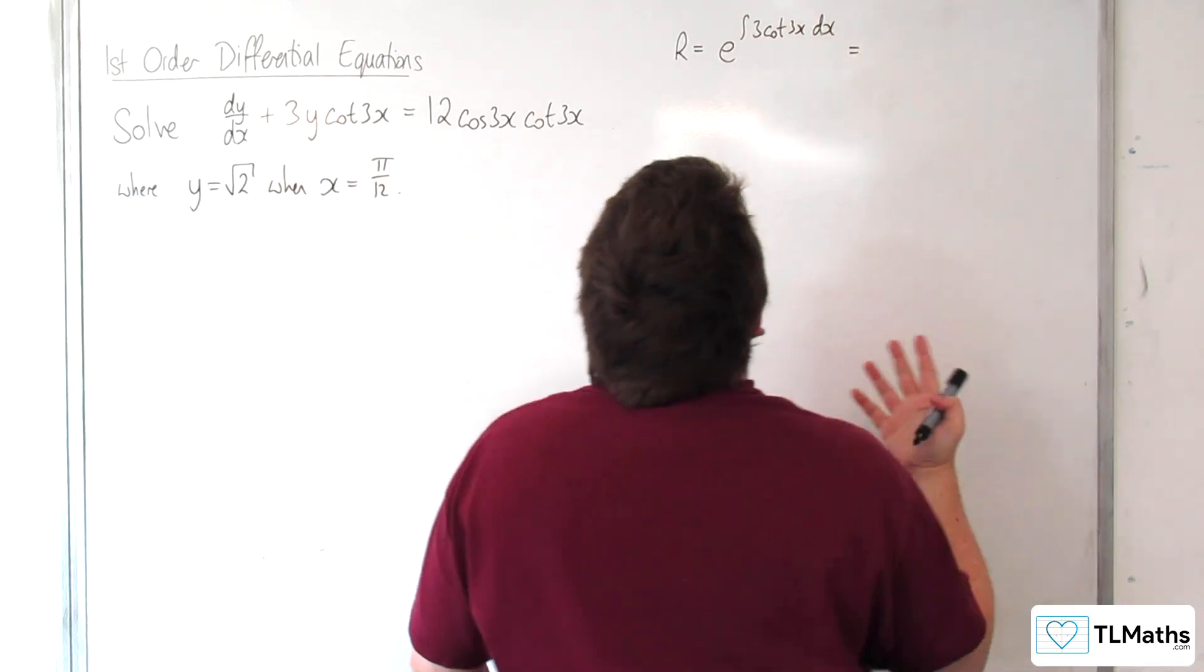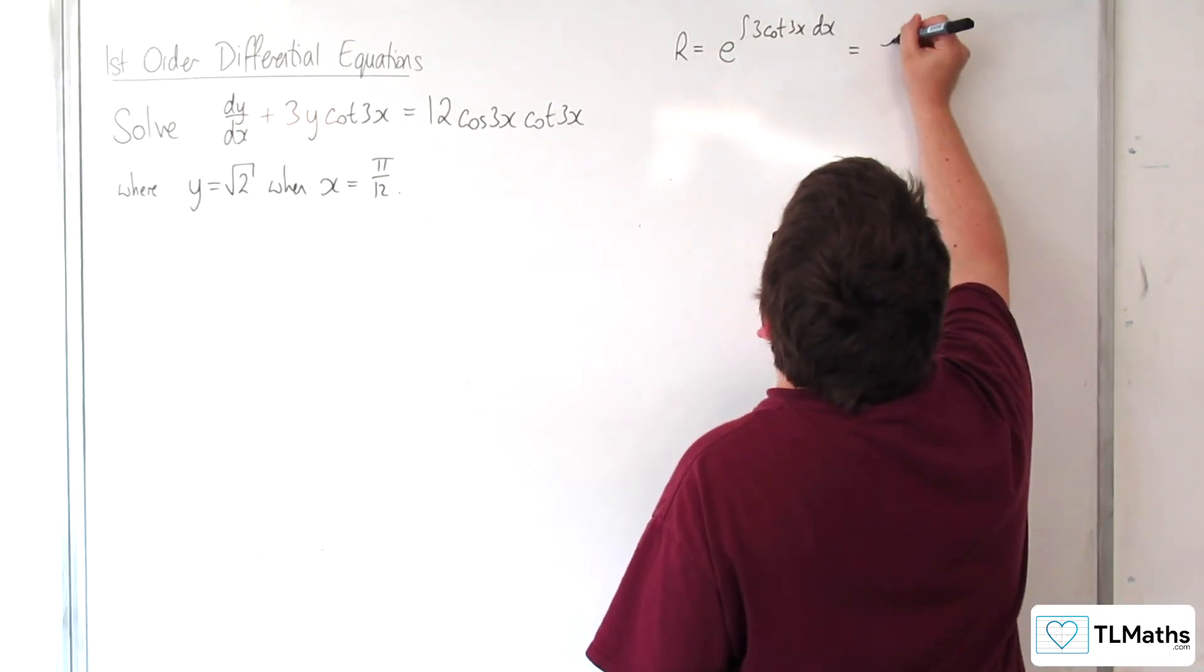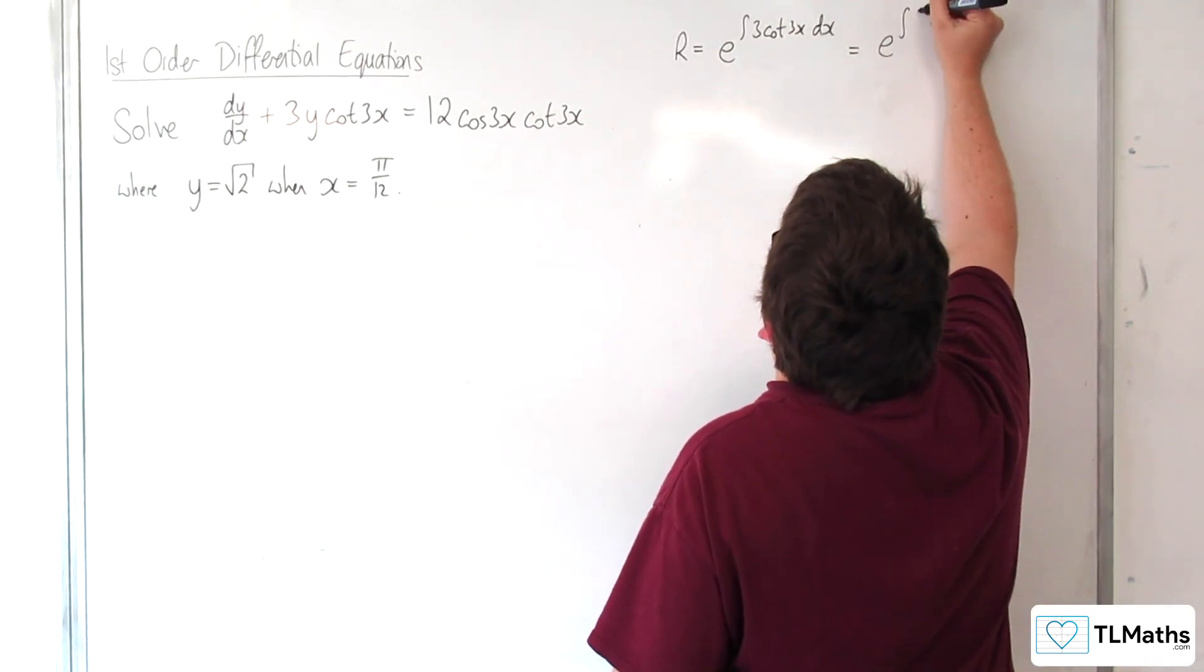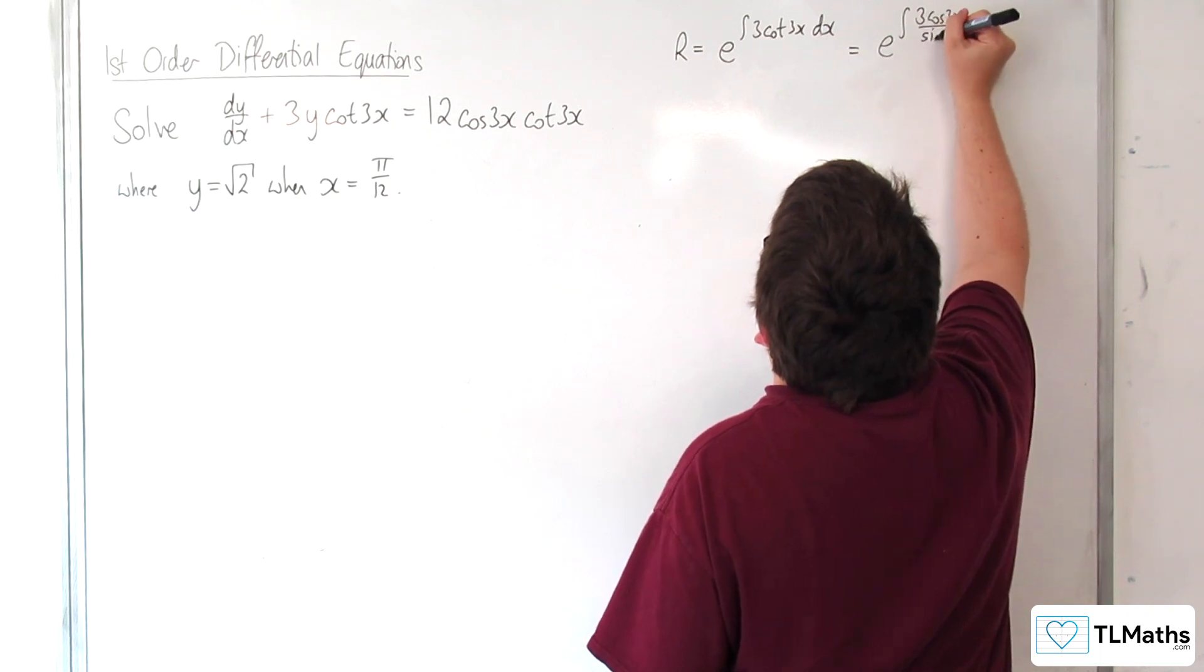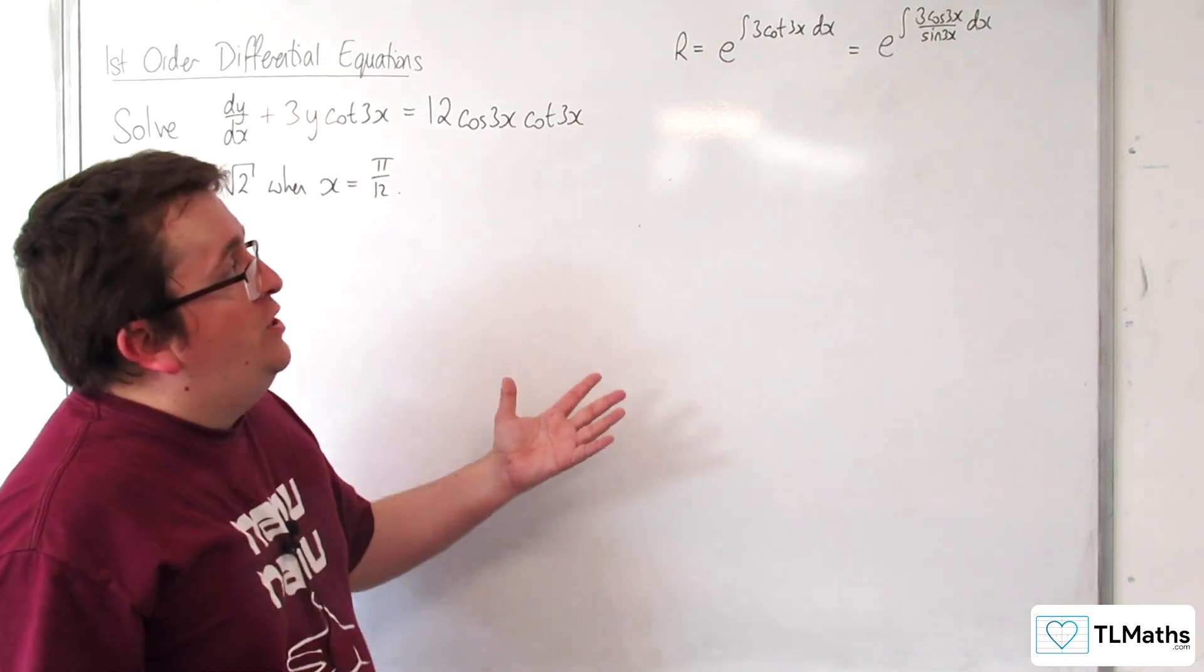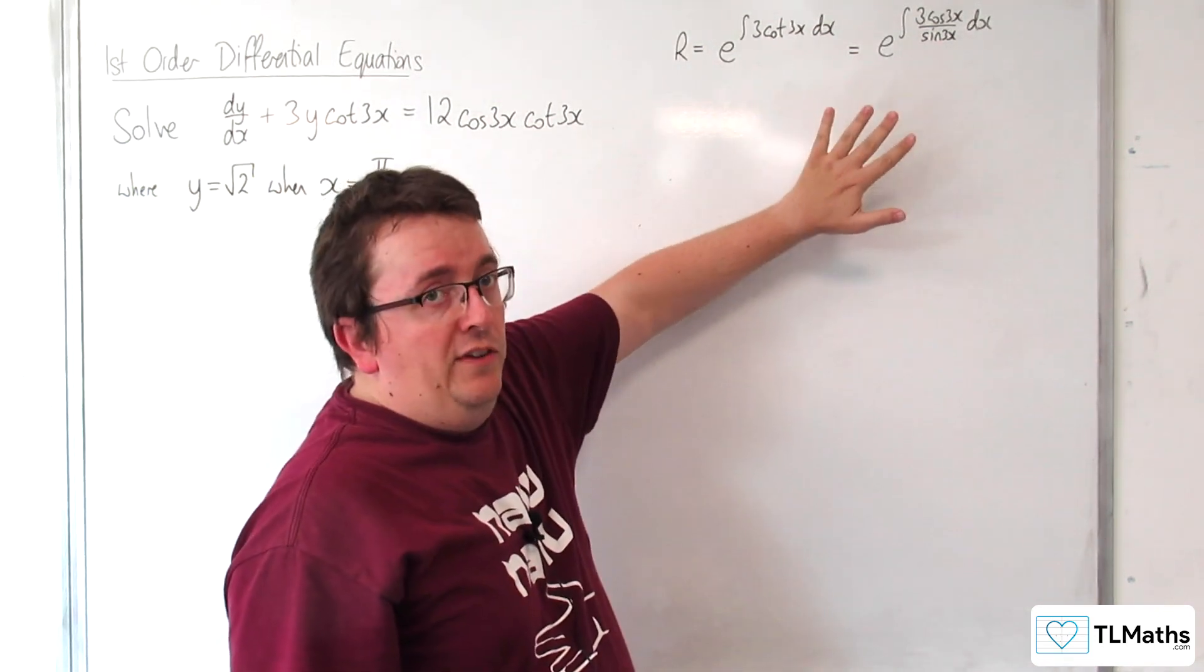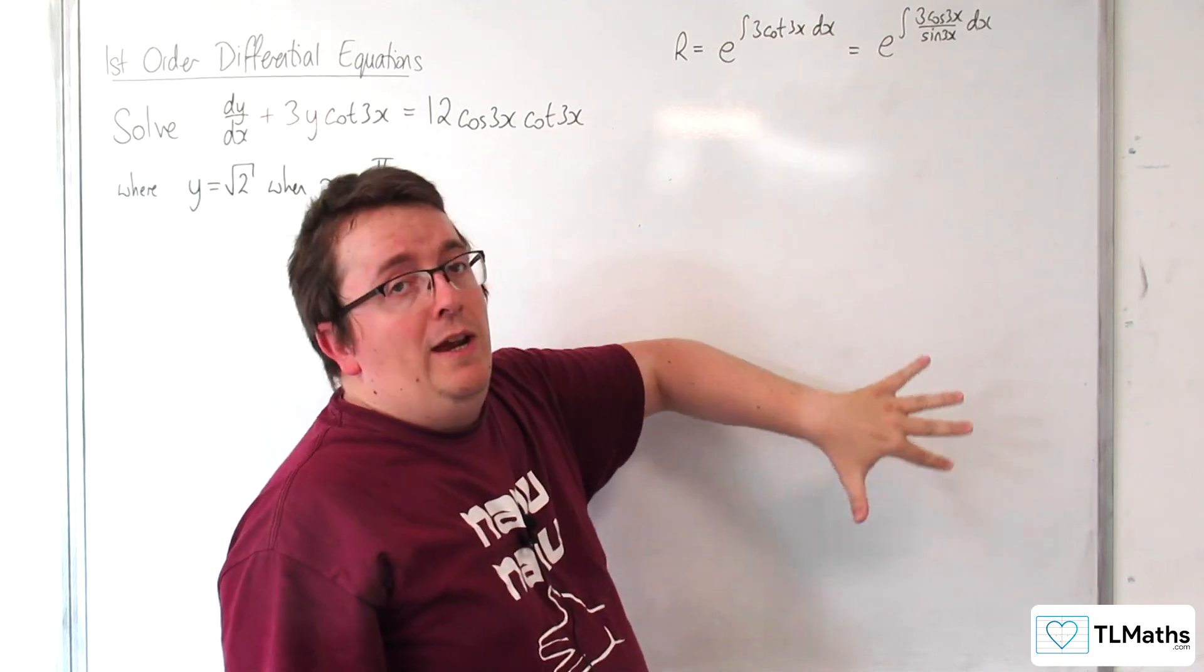We need to integrate 3 cot 3x. Well, that is 3 cosine 3x over sine 3x. And now you should notice that the bottom, sine 3x, the denominator, differentiates to the numerator.